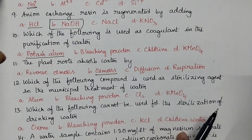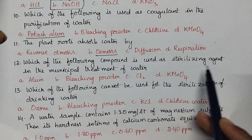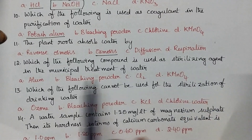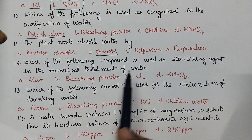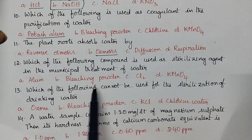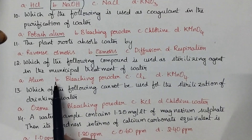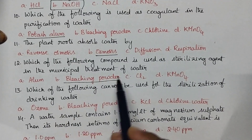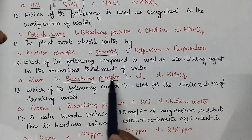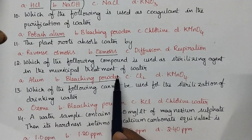Which compound is used as a sterilizing agent in the municipal treatment of water? For the sterilization of municipal water, bleaching powder is used. So, bleaching powder is used for the sterilization of municipal water treatment.